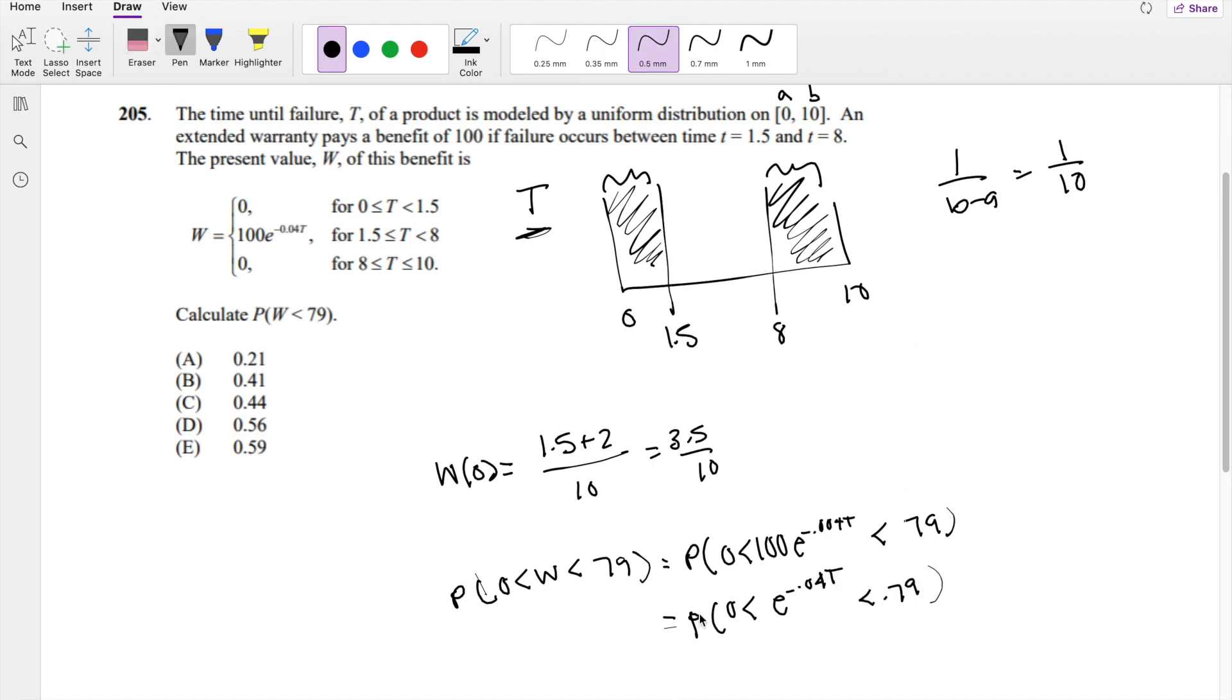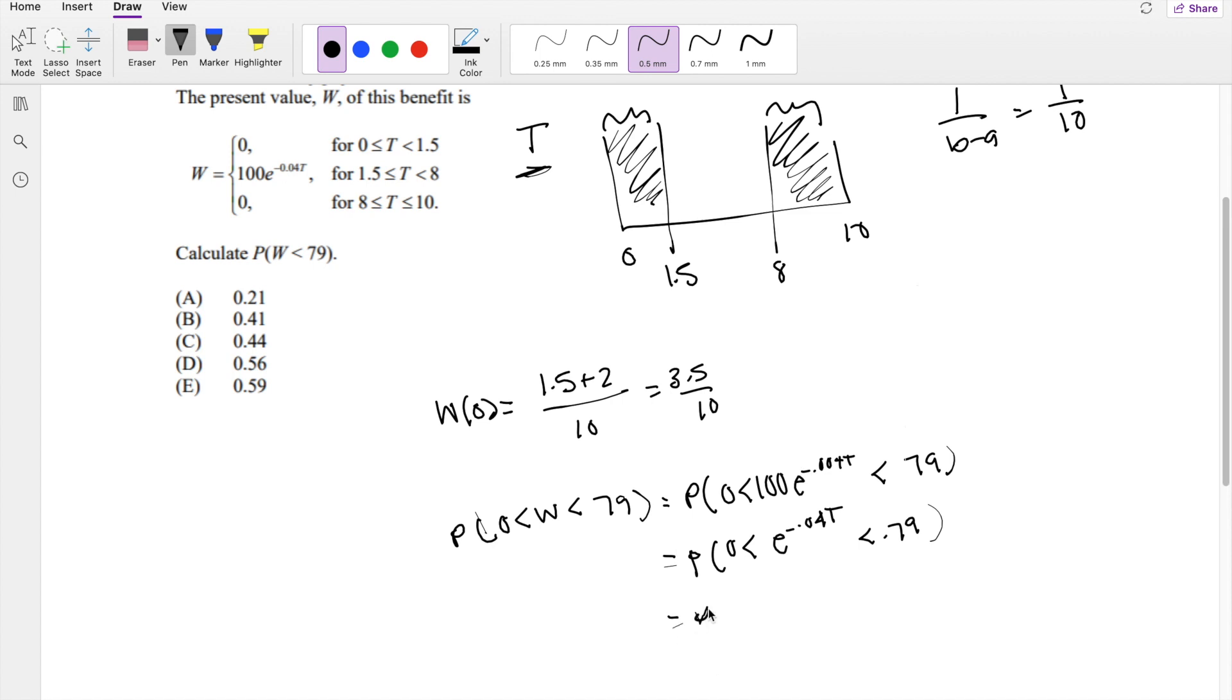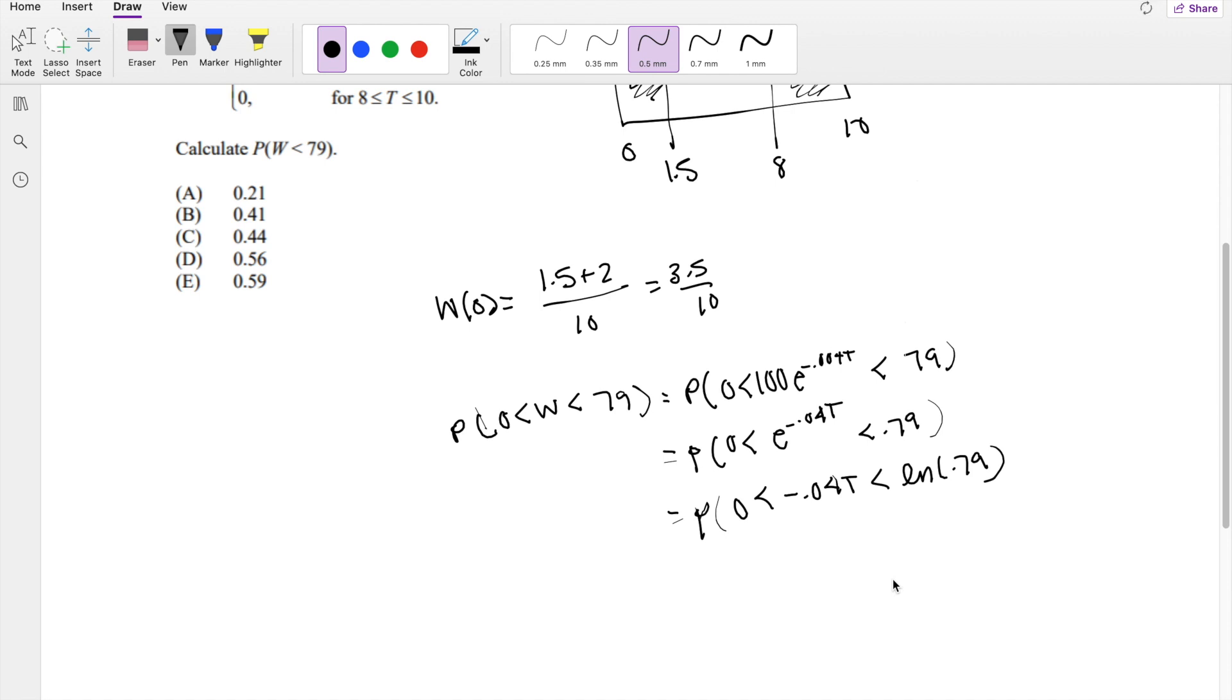I can take the natural log of both sides. 0 is less than negative 0.04T is less than natural log of 0.79. Finally, I'm going to divide both sides by negative 0.04. But remember, when I divide an inequality by negative, the sign flips.